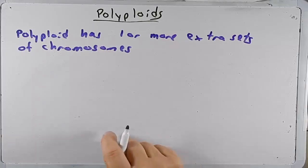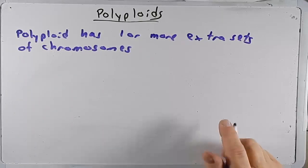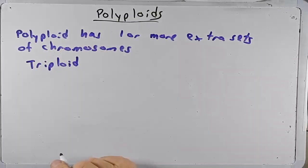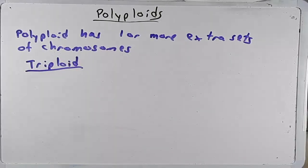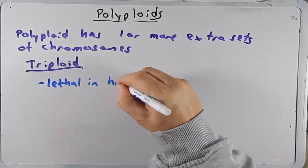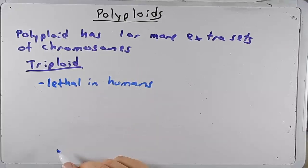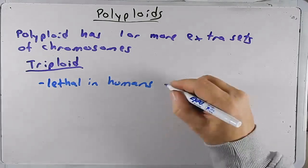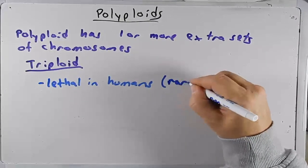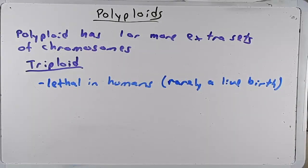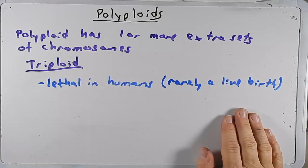When we think of polyploids in humans, most that we detect are triploids. A few things about triploids: first, triploids are lethal in humans. With a tetraploid or pentaploid, anything beyond two copies is lethal in humans. Sometimes you might rarely have a live birth, but that live birth does not survive very long — just a matter of days at most — and you see major organ failure in every single organ.